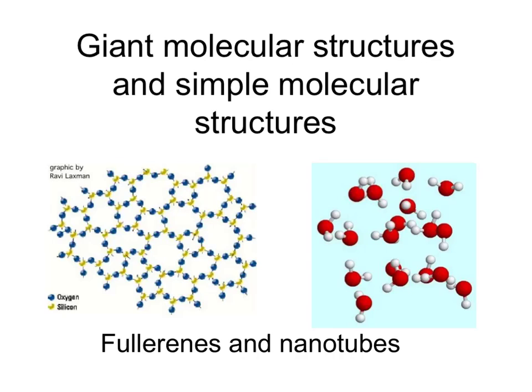This tutorial looks at the two final parts of the C3 specification. The first part is about giant molecular structures and simple molecular structures and the difference in their properties. The second part is about fullerenes and nanotubes, their uses and the properties that make them suitable for these uses.